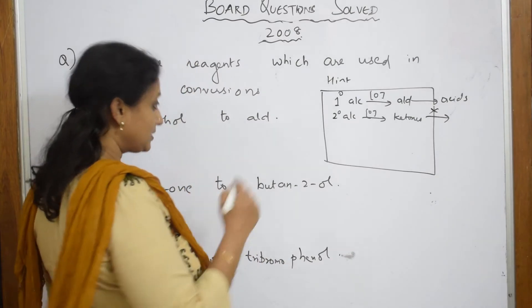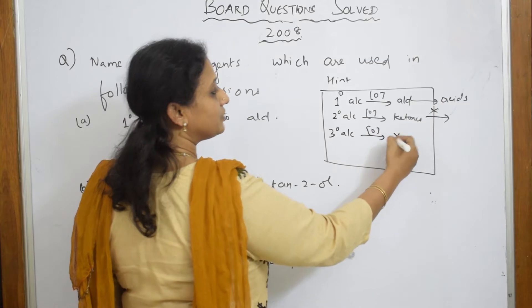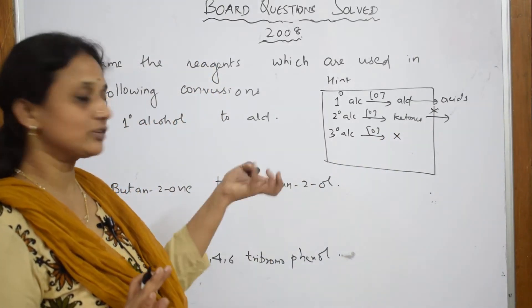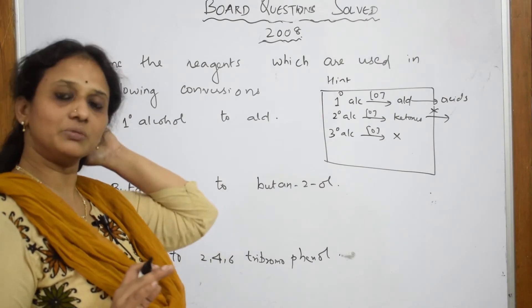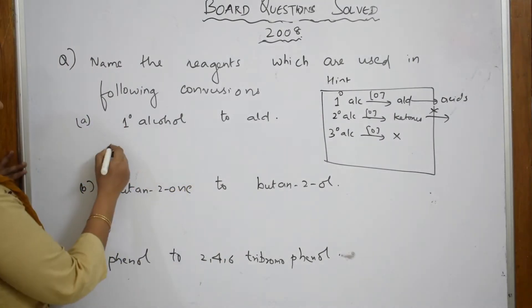And tertiary alcohols - oxidation is very difficult. Only under vigorous conditions will it happen; normally at normal temperature it resists oxidation. Now what did they give me? Primary alcohol.